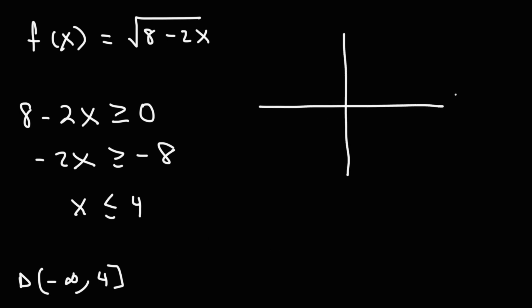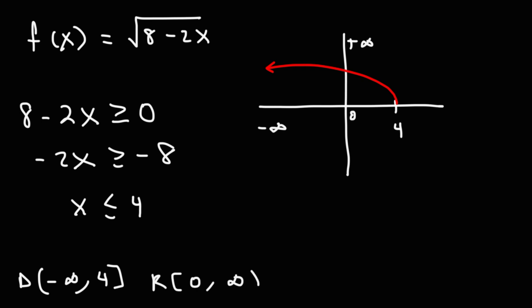If you were to sketch this graph, it would have an x-intercept of 4. If you have a positive sign in front of it, it's going to be above the x-axis and go this way. So we can see why the domain will be from negative infinity to 4. Now looking at the range, the lowest y-value is 0 and the highest can continue going up to infinity. So the range is 0 to infinity, which means this is our answer — that's going to be the domain of the inverse function.